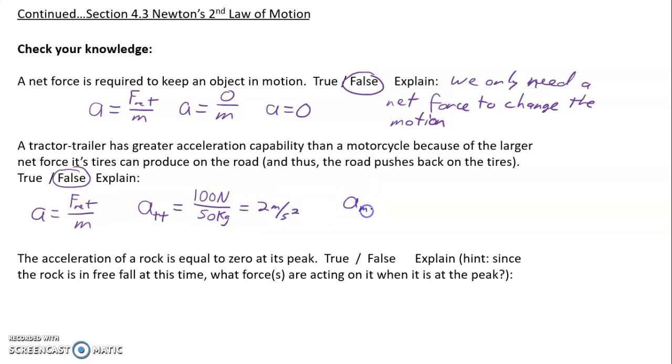Whereas a motorcycle, it has less force. Let's say it only has 50 newtons of force, but its mass is also less, but its mass isn't half as much. Maybe its mass is only, let's say, 5 kilograms. And so its acceleration would be 10 meters per second squared. So it is a much greater acceleration.